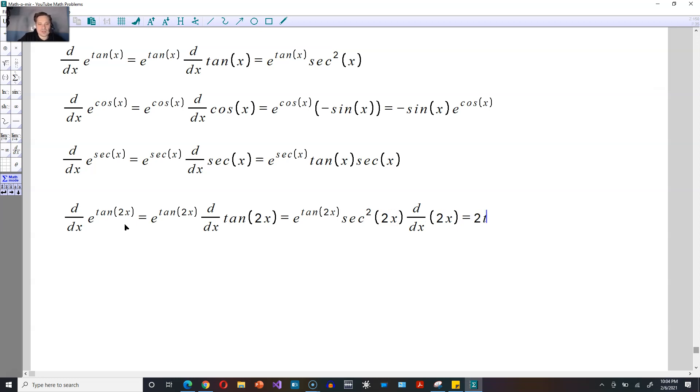That can go out front. So you end up with 2, and then e raised to the tangent of 2x, and then secant squared of 2x. And that is the answer.